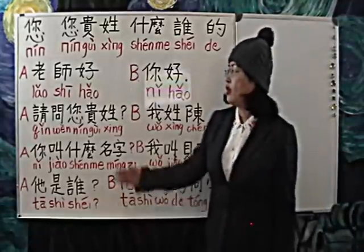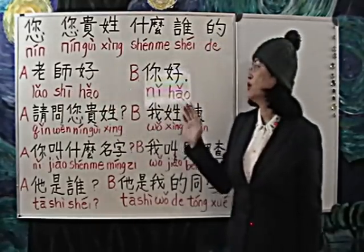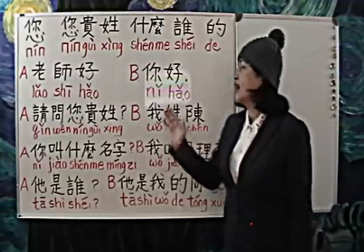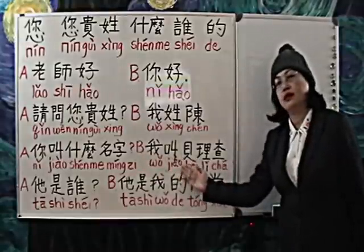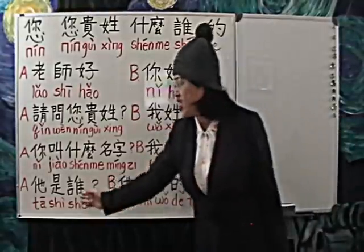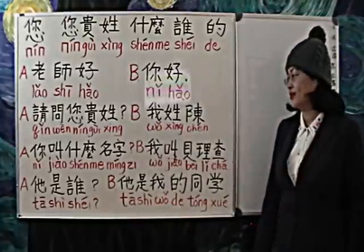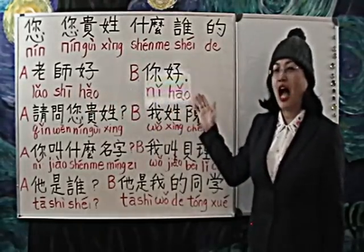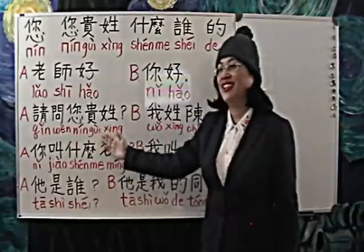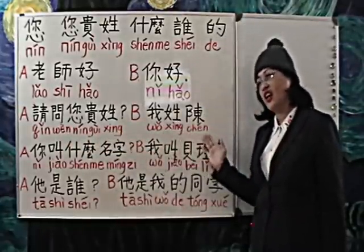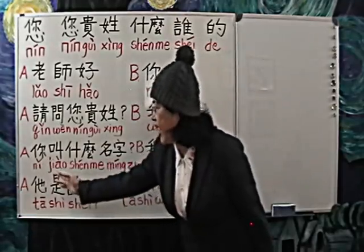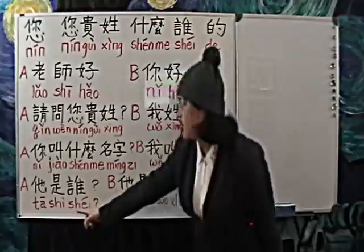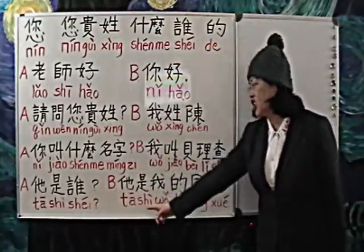Let's practice all these sentences. 老师好。 您好。 请问您贵姓。 您叫什么名字? 我叫贝里夏。 她是谁? 她是我的同学。 她是谁? 她是我的同学。